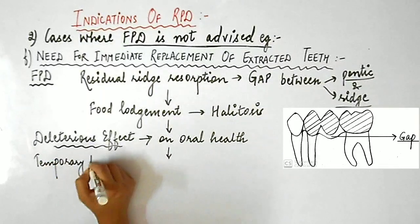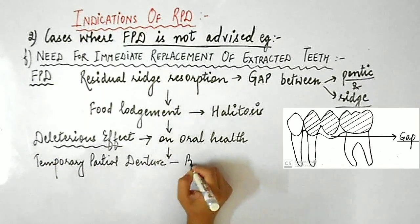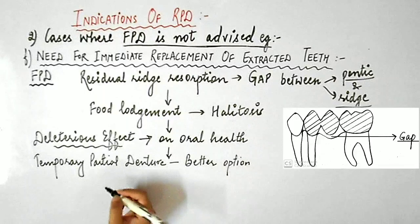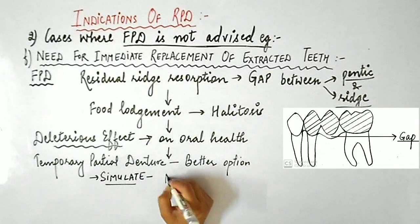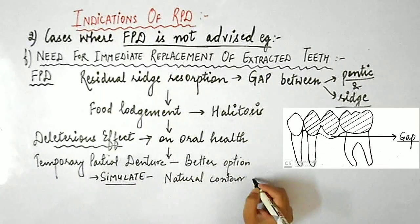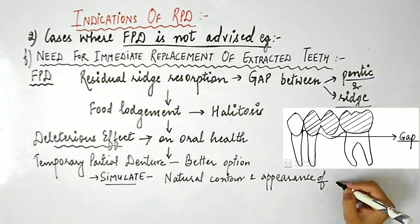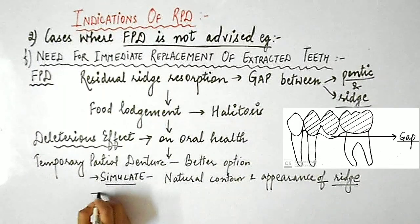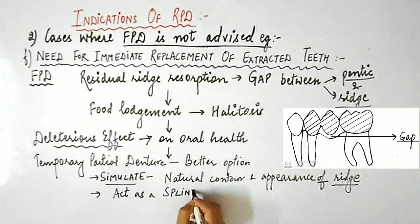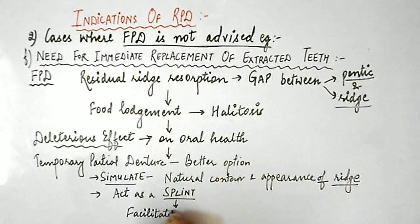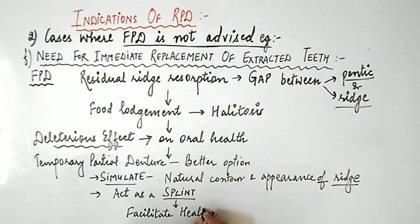Hence, temporary partial denture is a better option in such cases as it will simulate the natural contour and appearance of the lost portion of the ridge, and it will also act as a splint and facilitate healing at the extraction site.